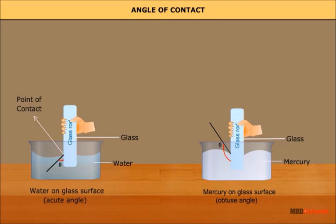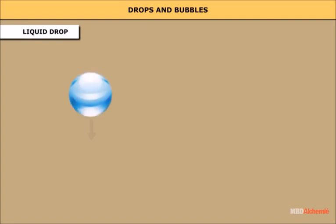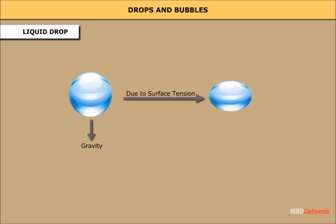The value of the angle of contact is independent of the inclination of the solid to the liquid surface, and depends upon the nature of the liquid and solid in contact. It increases with an increase in temperature. Drops and bubbles: free liquid drops and bubbles are spherical if the effects of gravity can be neglected. The resulting force due to surface tension acts inwardly, perpendicular to the surface, but cannot reduce the size of the drop to zero.